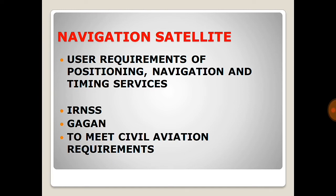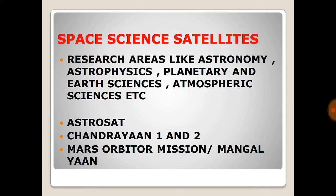Space science satellites cover research areas like astronomy, astrophysics, planetary and earth sciences, and atmospheric sciences. Examples include Astrosat, Chandrayaan-1, Chandrayaan-2, the Mars Orbiter Mission (Mangalyaan), and Gaganyaan. Gaganyaan is India's human spaceflight program, announced on 15th August 2018, with a deadline of 2022 — the 75th Independence Day — to send three astronauts into space.